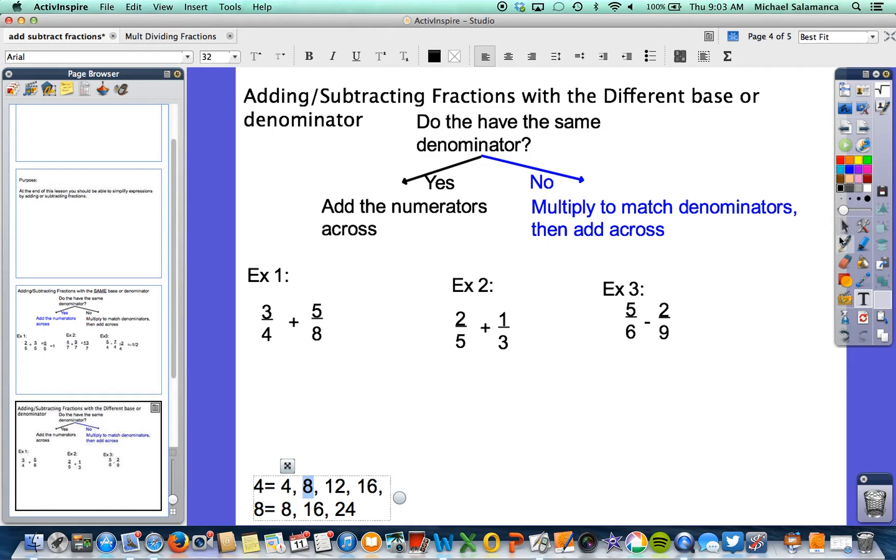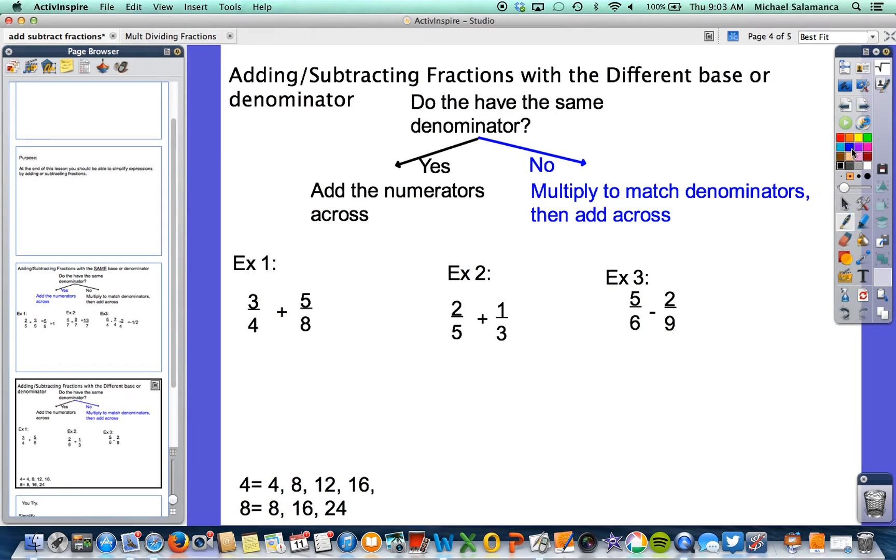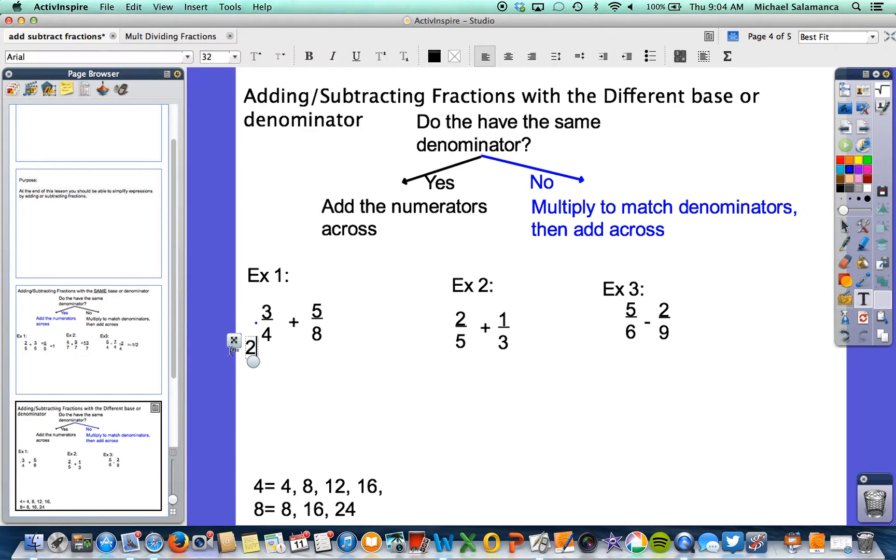Now in order for us to make that work, we need to multiply the 4, the denominator of 4, by 2. So we're going to multiply that by 2. But you have to remember, what we do to the bottom, we have to do to the top. So we are going to multiply by 2 to both the numerator and the denominator. That means this will now become a fraction of 6 eighths. And we are going to go ahead and add that to 5 eighths.